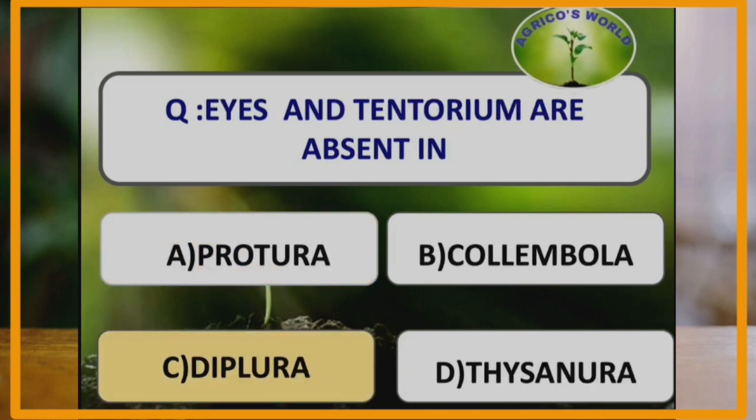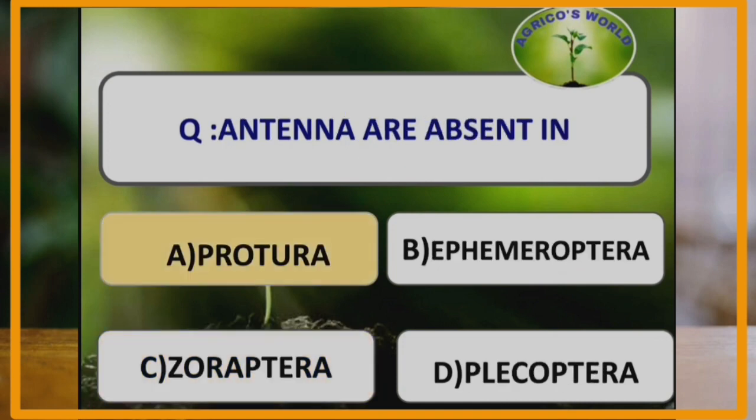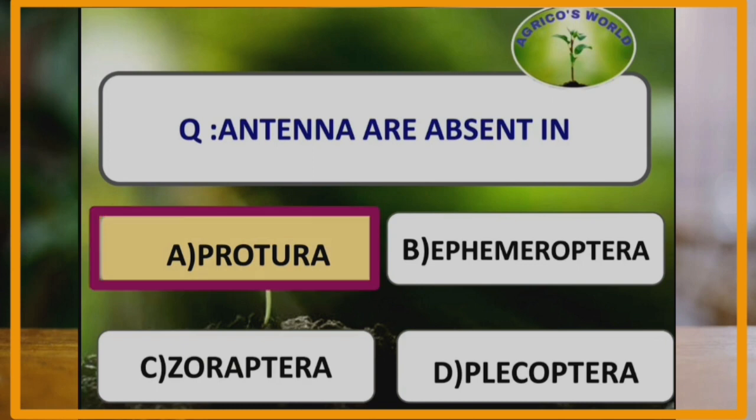Eyes and tentorium are absent in the order Diplura. In Diplura, eyes and diplomas are absent. Antennae are absent in the order Protura. Protura does not contain antennae and eyes, and the forelegs function as antennae in Protura.